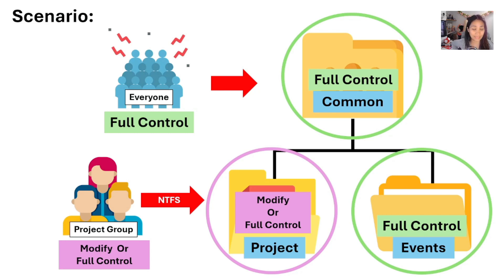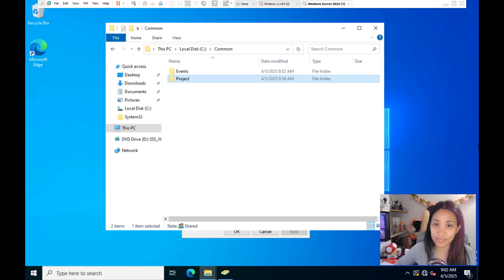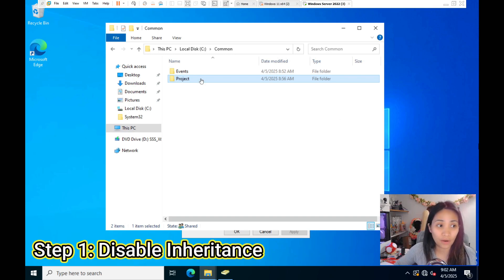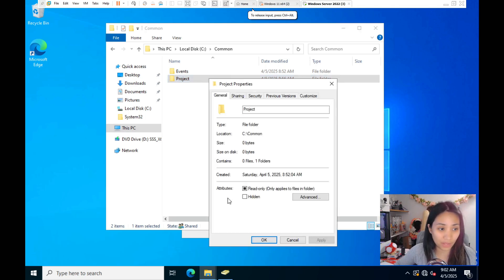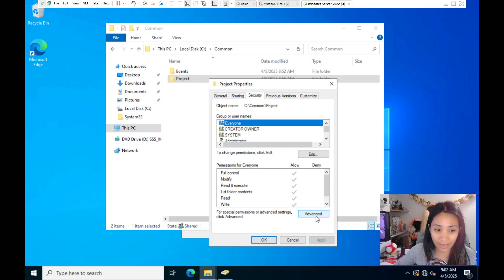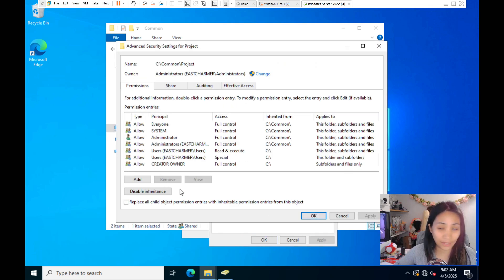Now let's implement the scenario: the Common folder should have full control for everyone, but the Project subfolder should only be accessed by the Project group with Modify or Full Control. Other subfolders keep the same permissions as the parent, but Project folder access should be restricted to the Project group only. The first step is to disable inheritance — right-click Project, select Properties, go to the Security tab, click Advanced, and you'll see a 'Disable Inheritance' button at the bottom.